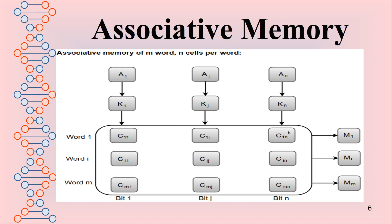This is the content addressable memory or associative memory. It consists of content which will be searched in parallel. If there is a match, the match register finds the words. Finally, it will be written in the form of matching.